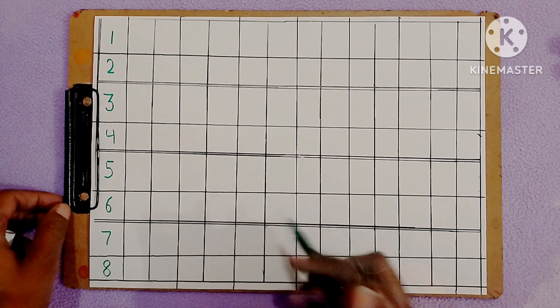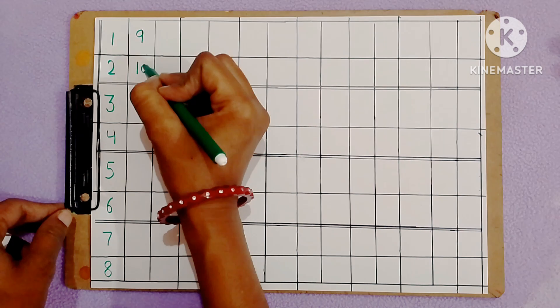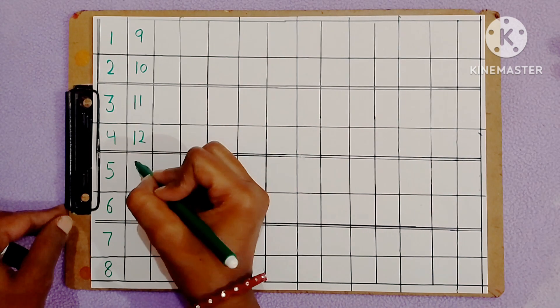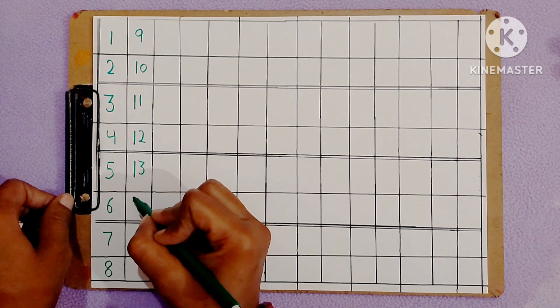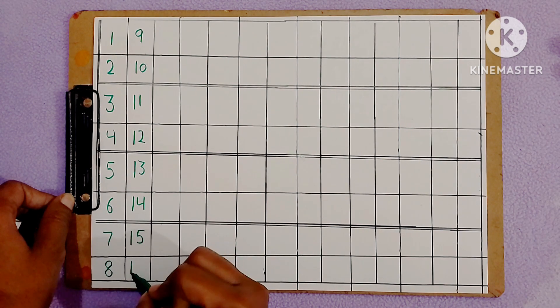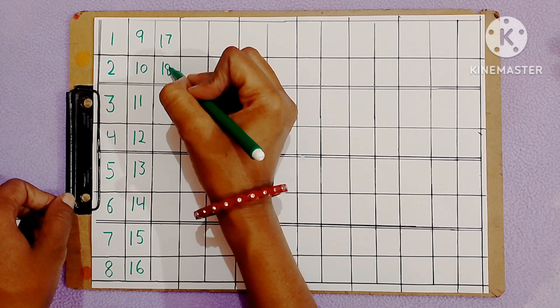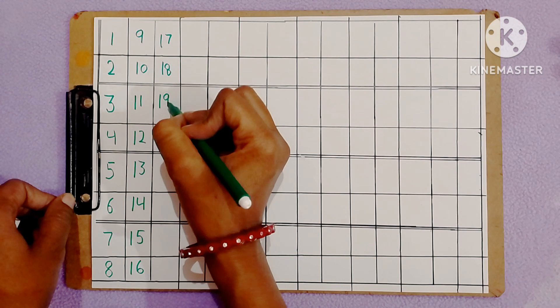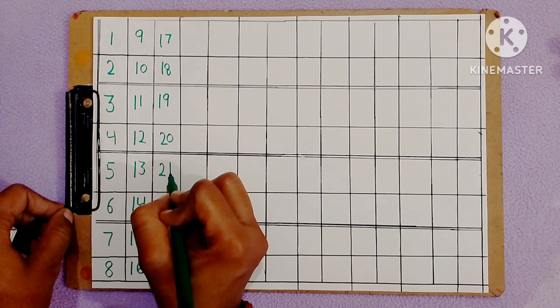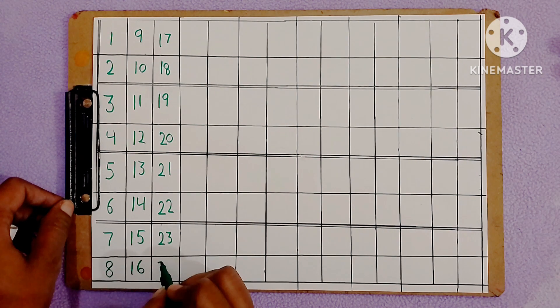Nine, ten, eleven, twelve, thirteen, fourteen, fifteen, sixteen, seventeen, eighteen, nineteen, twenty, twenty-one, twenty-two, twenty-three.